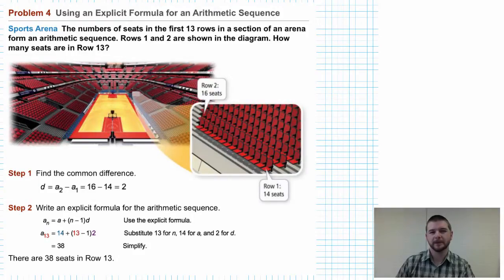Example problem 4, using the explicit formula for an arithmetic sequence. So consider this sports arena. The number of seats in the first 13 rows in a section of an arena form an arithmetic sequence. Rows 1 and 2 are shown in the diagram. How many seats are in row 13?